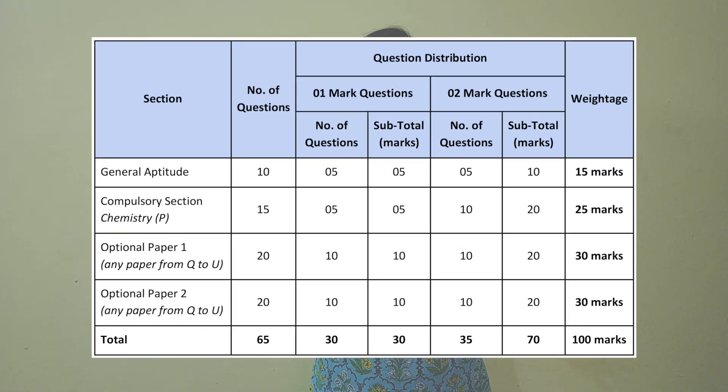Now let's look at the distribution for XL. General Aptitude remains the same — 15 marks with 10 questions. The compulsory subject in XL is Chemistry, which carries a weightage of 25 marks with 15 questions — five questions for one mark and 10 questions for two marks. For both optional subjects in XL, the weightage is 30 marks each with 20 questions — 10 questions for one mark each and 10 questions for two marks each. So for 30 marks there are one-mark questions and for the remaining 70 marks there are two-mark questions.